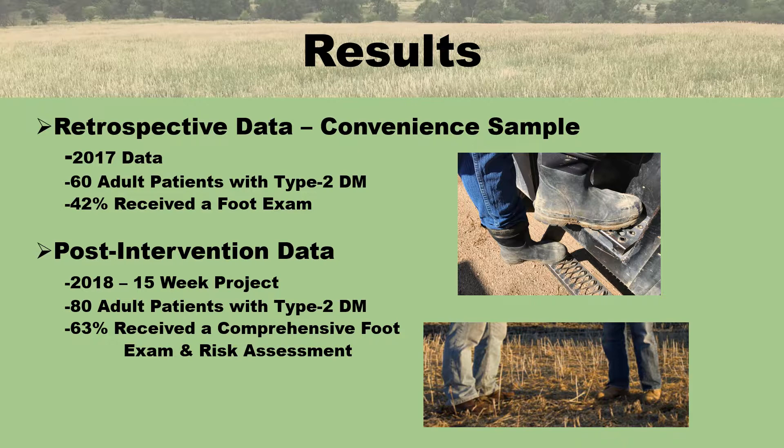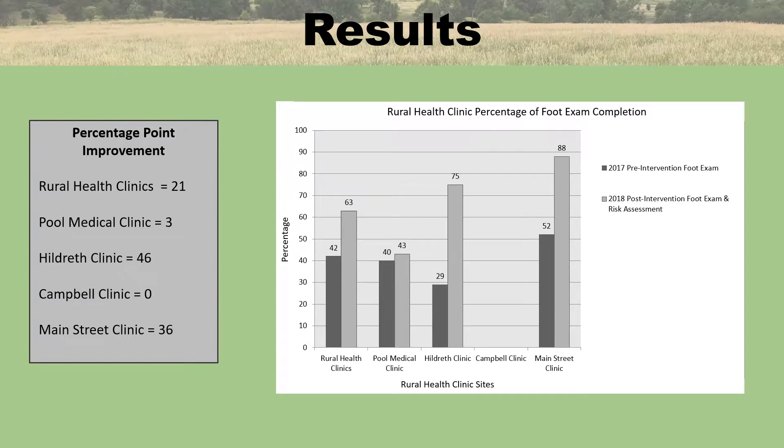Post-intervention data collected in 2018, 15 weeks after the project was implemented, showed 80 adult patients aged 19 years and older with type 2 diabetes presented for primary care. The demographic data revealed 52% were female ranging in age from 26 to 89 years of age, and 48% were male ranging in age from 47 to 84. Comparison is made pre and post intervention.